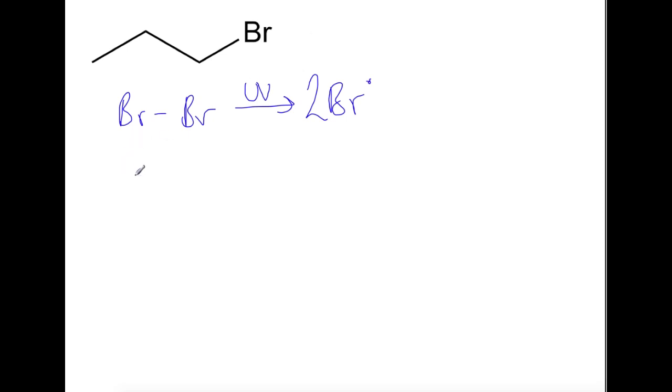Your propagation step would involve propane and one of your bromine radicals and this would allow you to form a propyl radical. You could then have a termination step involving the propyl radical and a bromine radical or you have this go on further to react with another bromine molecule. I'm going to write out a termination step.